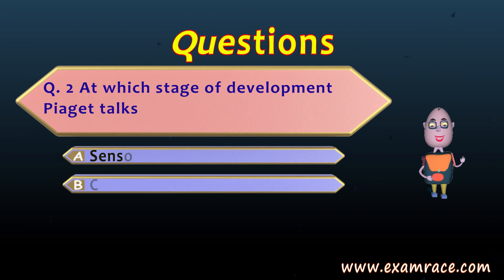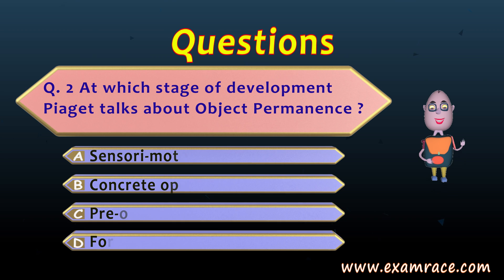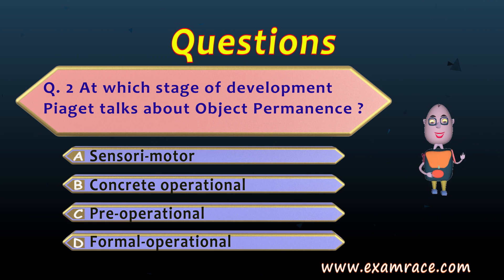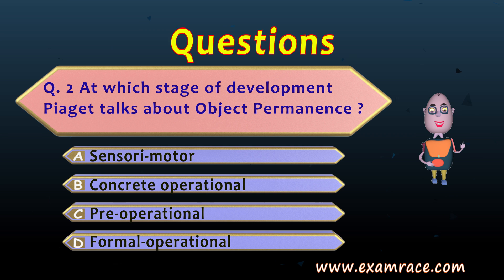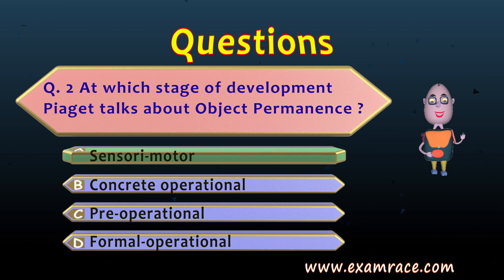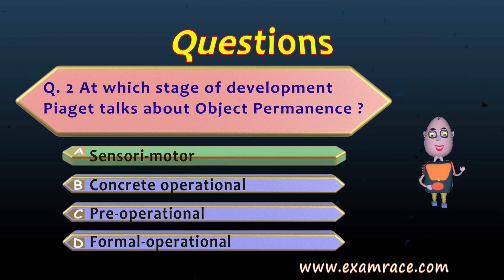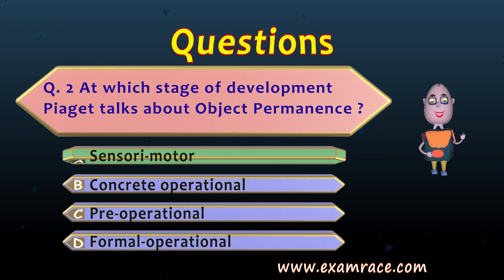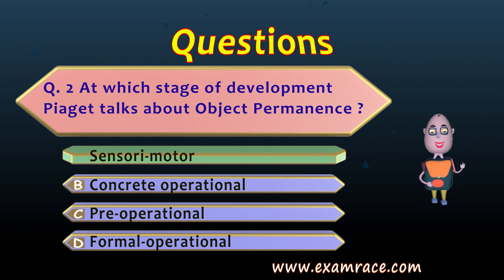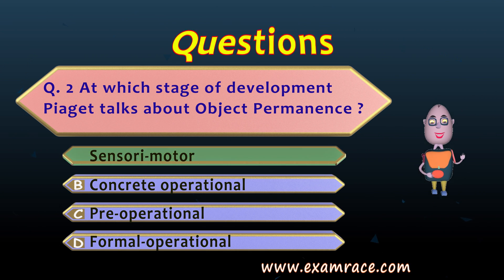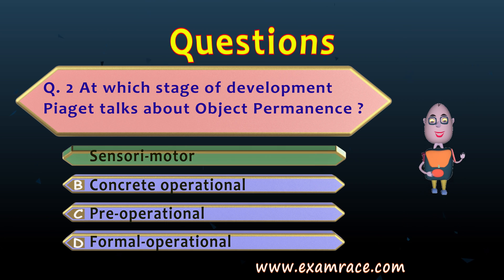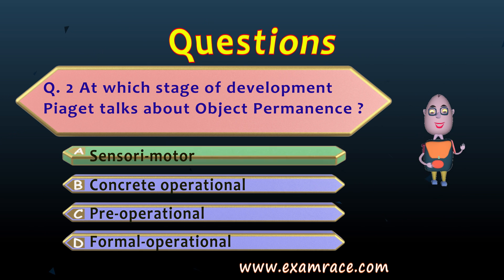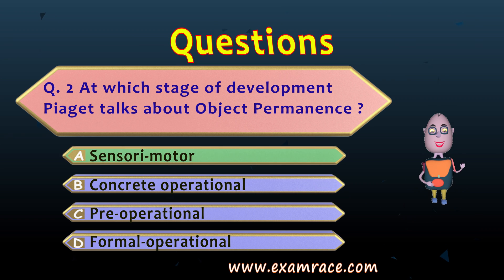Question number two: at which stage of development does Piaget talk about object permanence? The answer is A, because according to Piaget's stages of development, object permanence is seen in the sensory motor stage, where the infant believes in the permanence of an object if it is within her view.